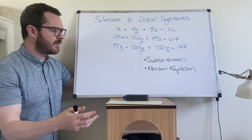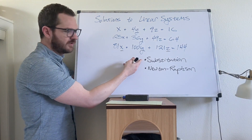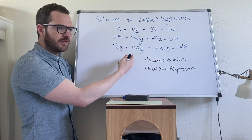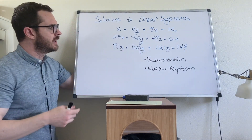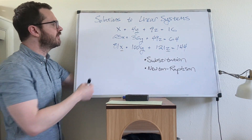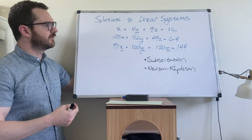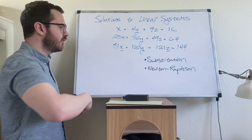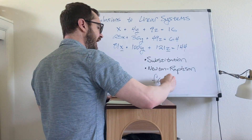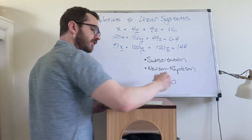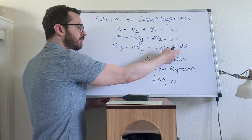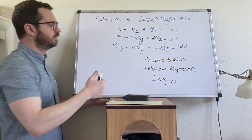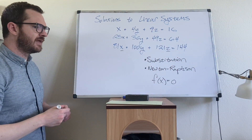If we want to solve that, we know we have methods already. We could do a substitution method — take one equation, solve it for a variable, plug it into another equation, solve it for a different variable. That approach gets tedious very quickly, even for a system with just three equations. We could also do a Newton-Raphson method, which can be used on systems where f(x) equals zero — simply move the bias terms to the left, making the system equal to zero. There are other methods we could use, though.